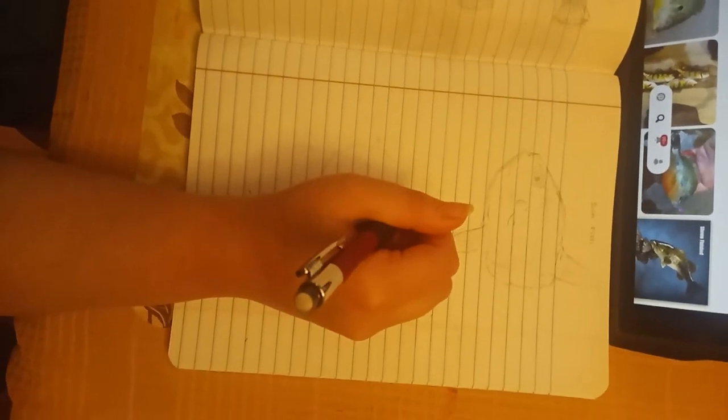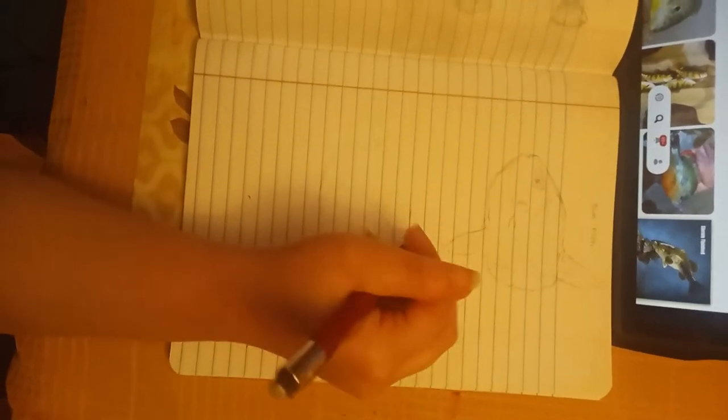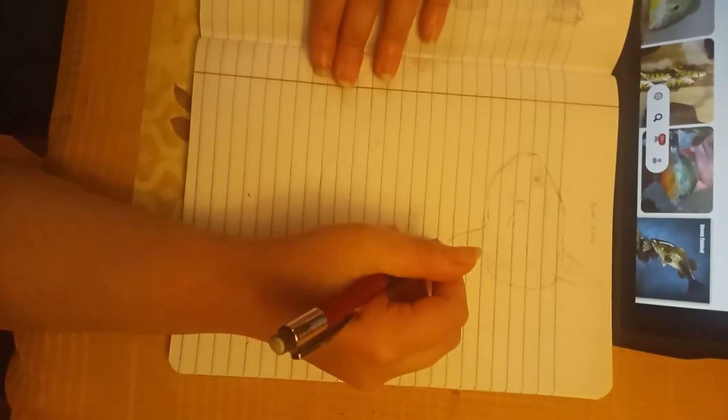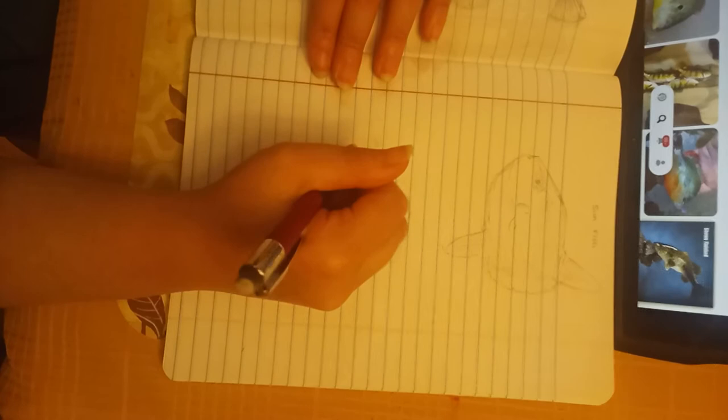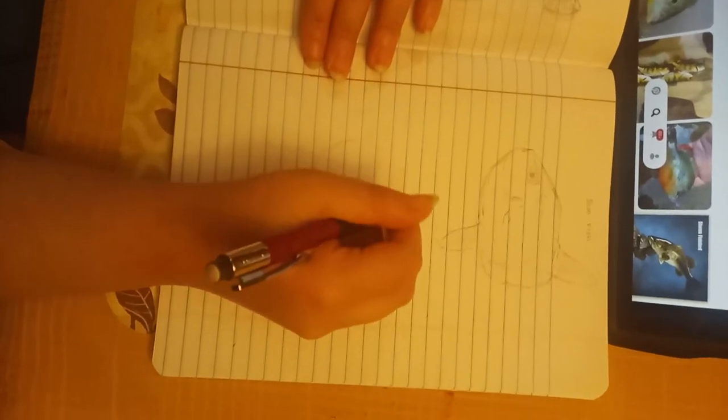Hello, this is Pencil Practice 90, and today we will be drawing this sunfish. So first, draw a circle very lightly on your paper.